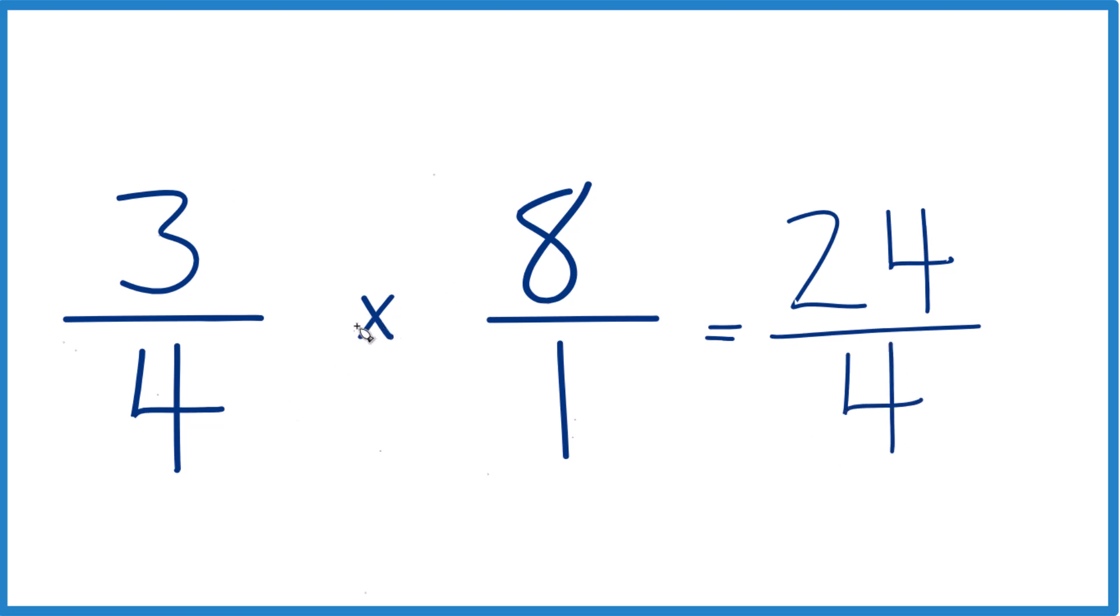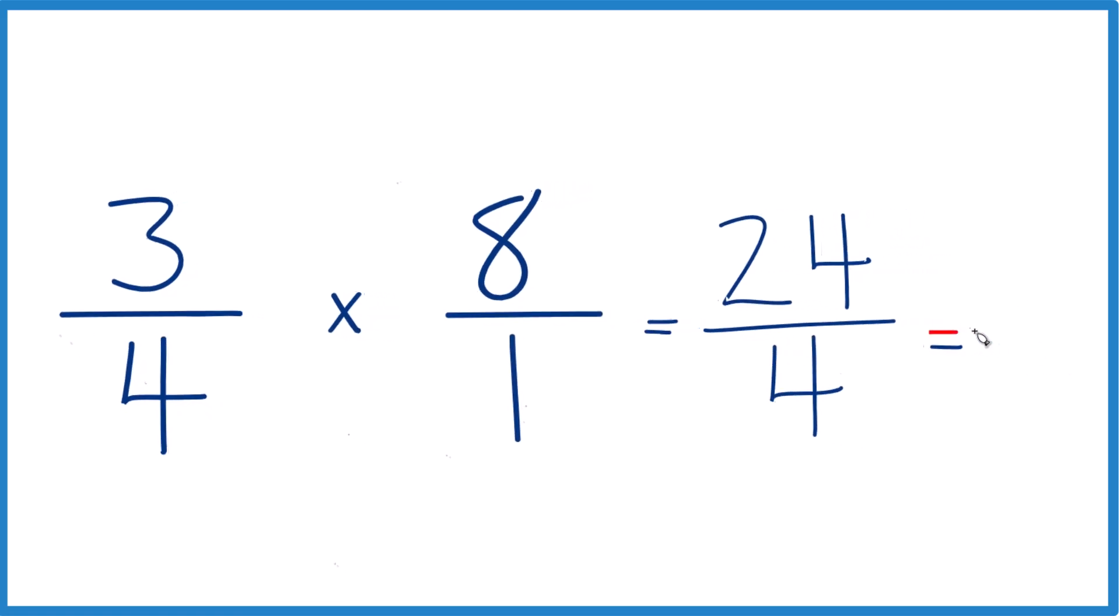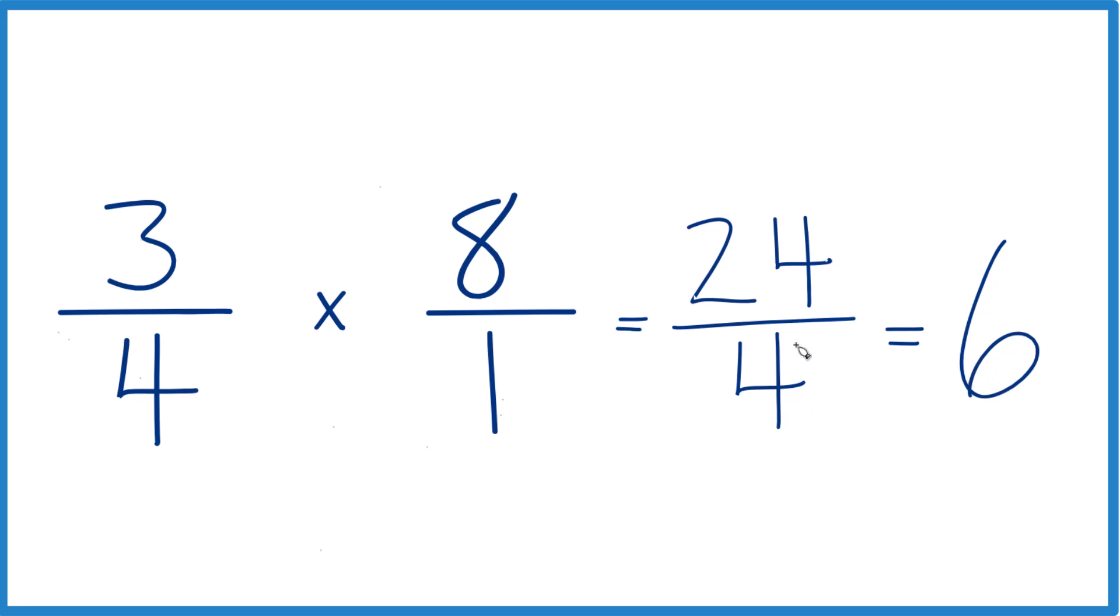So 3 fourths times 8, or 8 over 1, that's the same thing as 3 fourths divided by 1 eighth. We get 24 fourths, and we can actually simplify because 24 divided by 4 equals 6. 6 times 4 is 24.